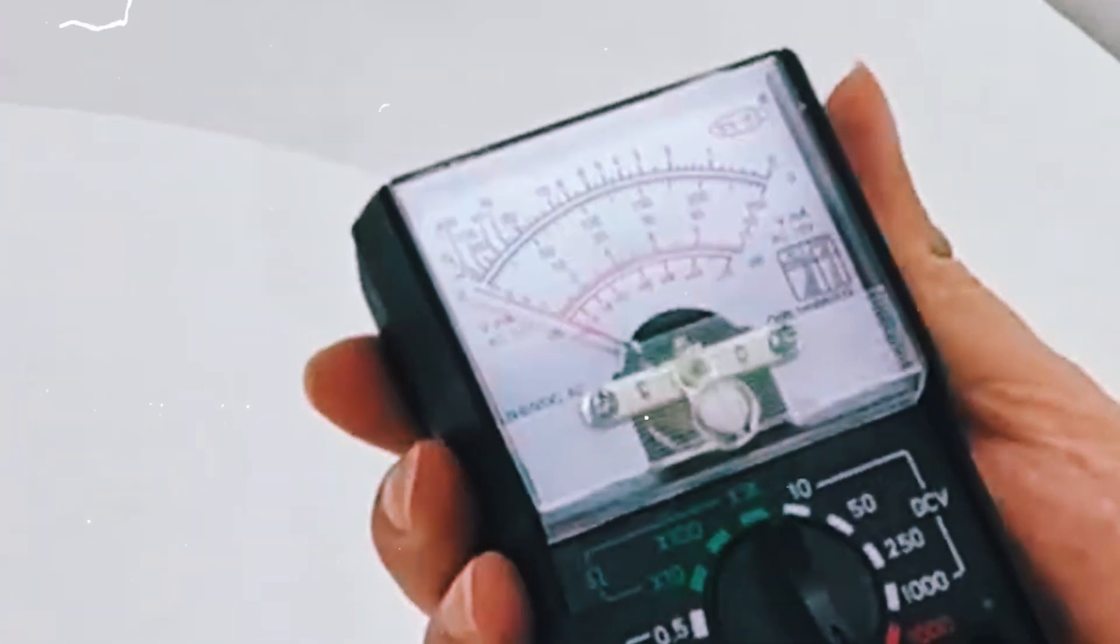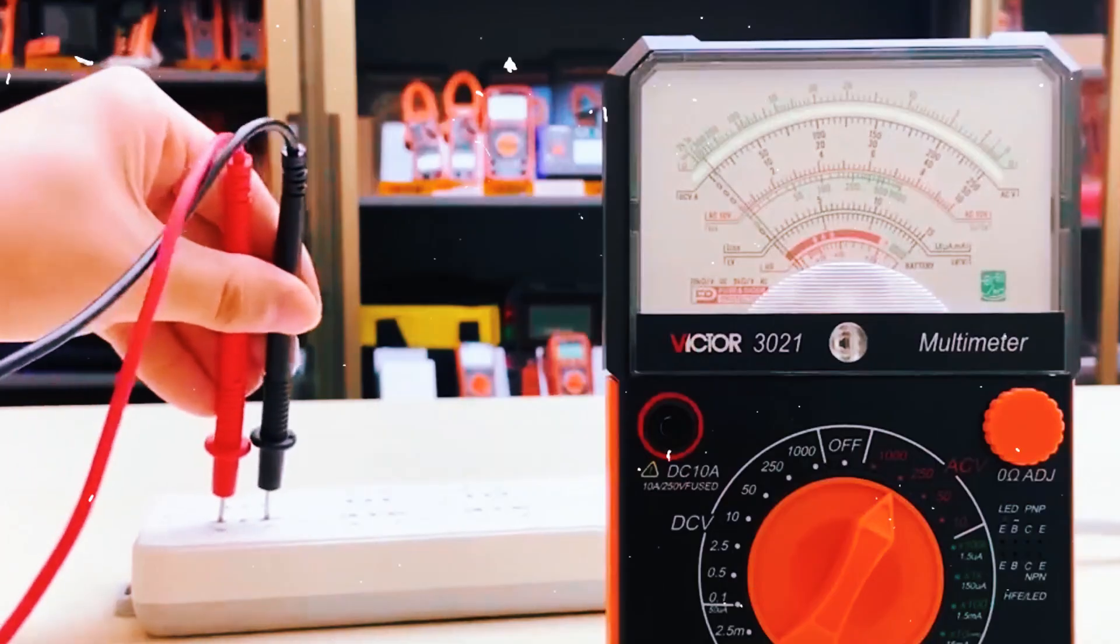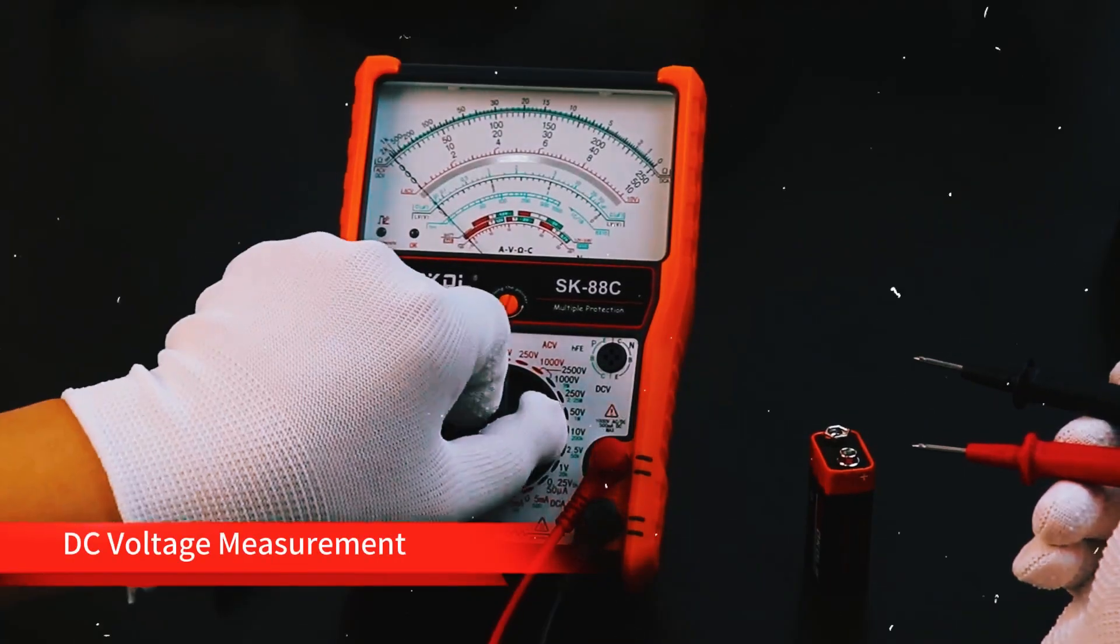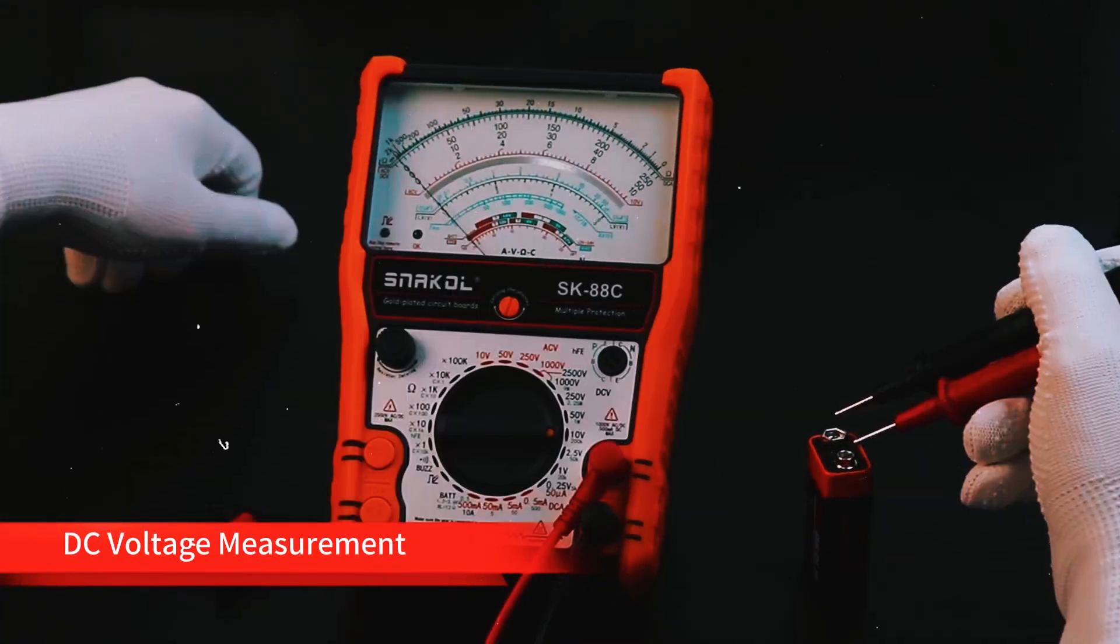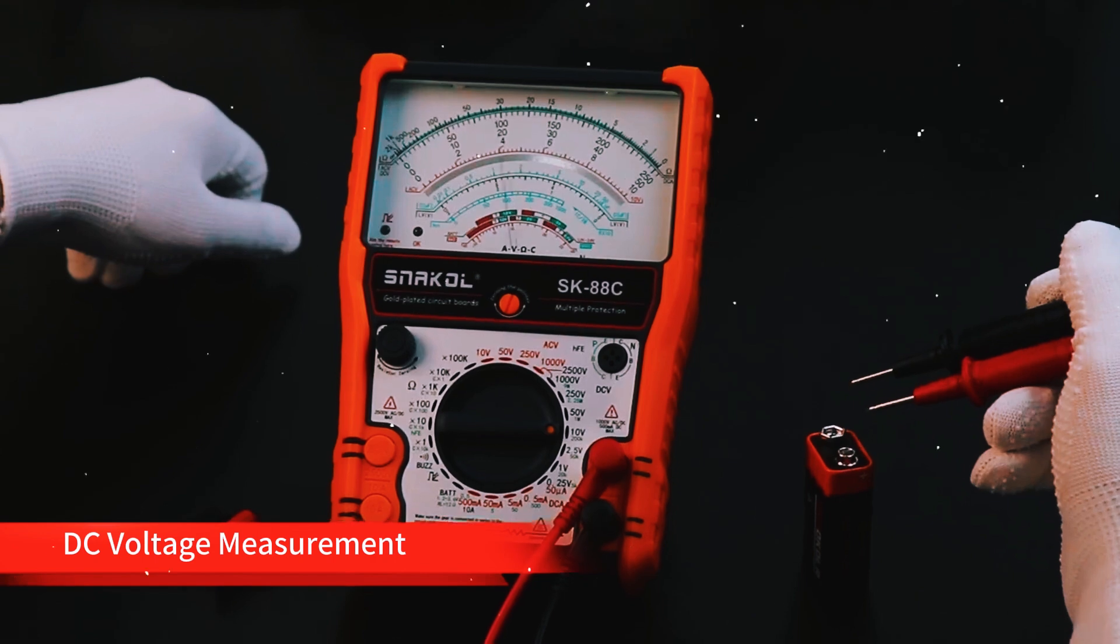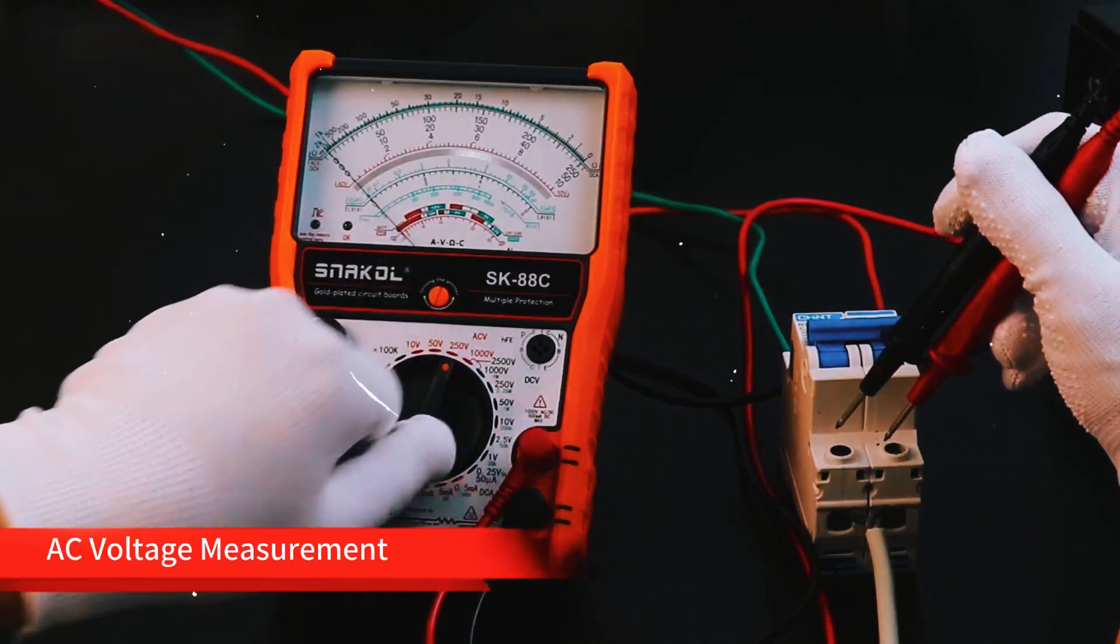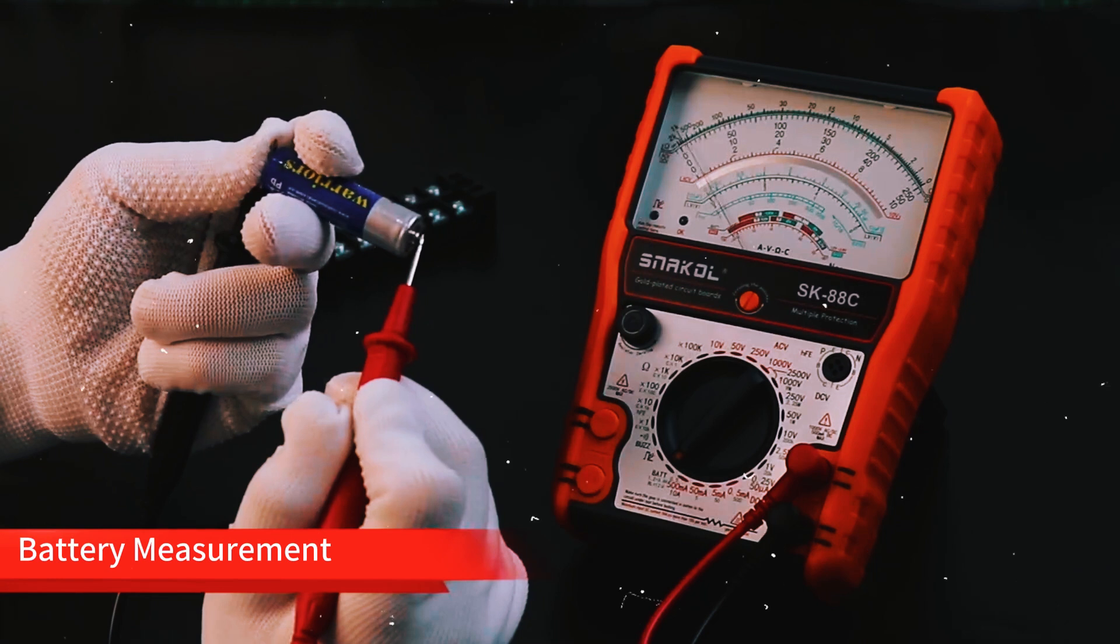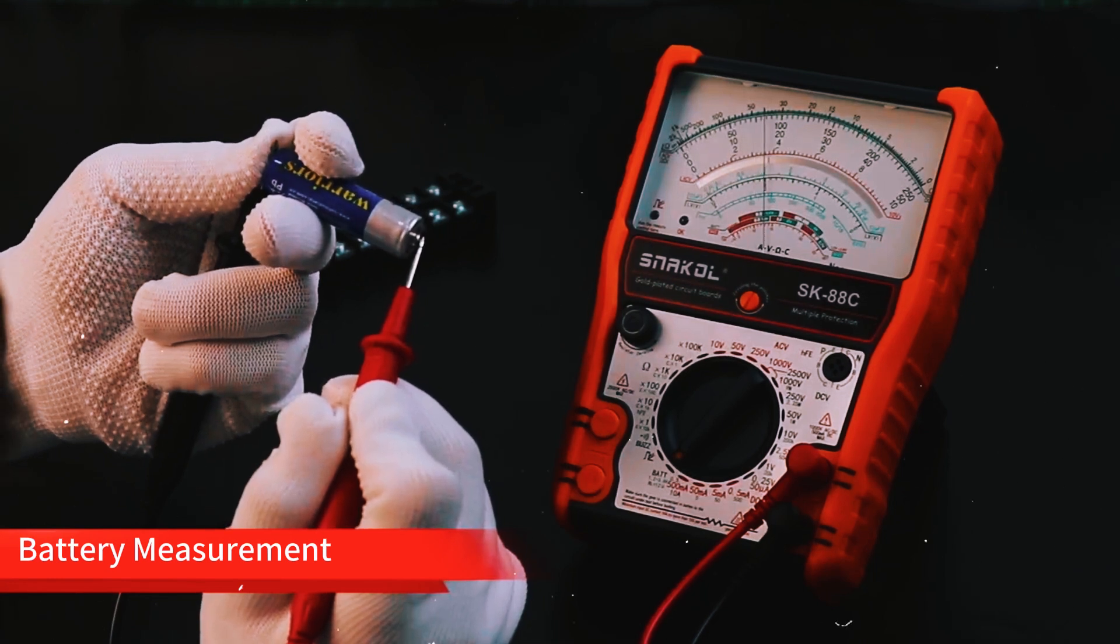Now, let's talk about analog multimeters. These work a little differently. Instead of a digital readout, you get a needle that moves across a scale to show you the measurement. At first glance, that might seem like a step back, but analog meters have a big advantage: real-time feedback.